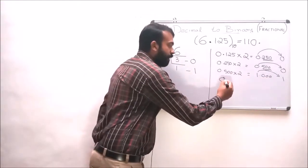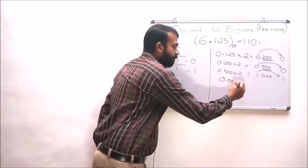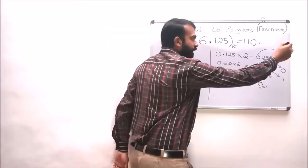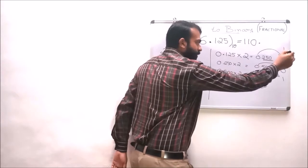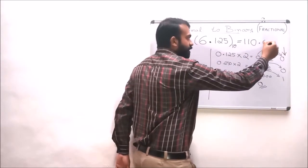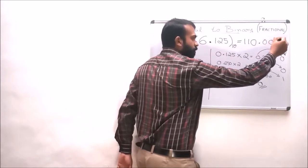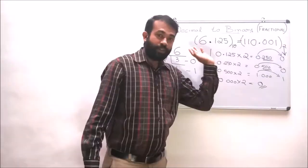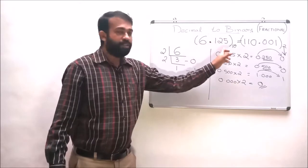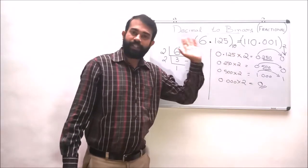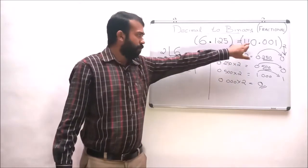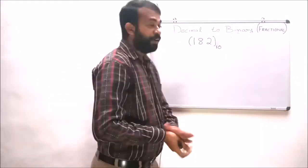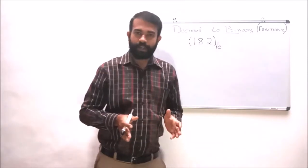Multiplying 0.000 by 2 gives 0. Reading the answer digits in order gives 0.001 to base 2. So the decimal number 6.125 can be represented in binary as 110.001. Let us consider another example.